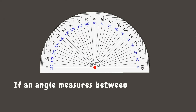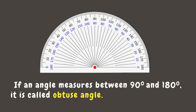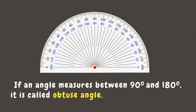If an angle measures between 90 degrees and 180 degrees, then it is called an obtuse angle. For example, a 130 degree angle is an obtuse angle since it's between 90 and 180 degrees. Also, a 110 degree angle is an obtuse angle. We can see an angle that falls between 140 and 20 degrees: 140 minus 20 is 120 degrees, therefore it is an obtuse angle. We can also use the outer scale: 160 minus 40 is also 120 degrees.